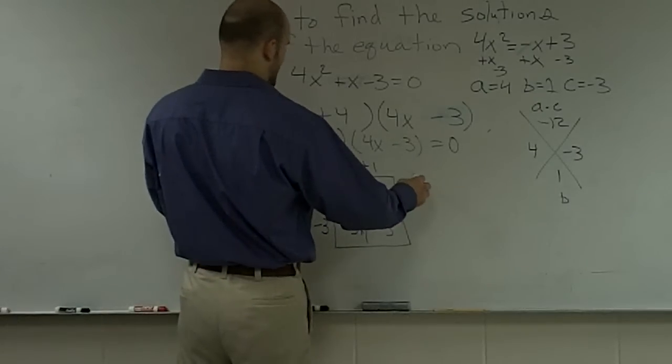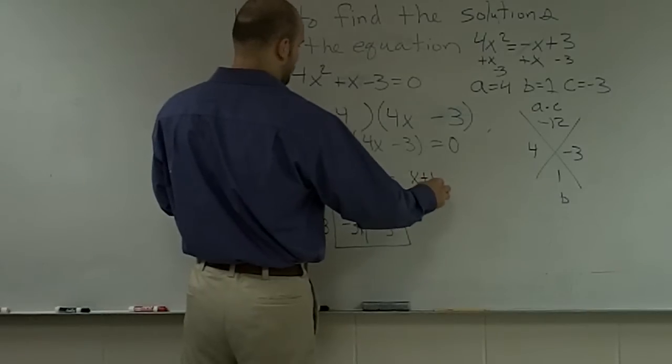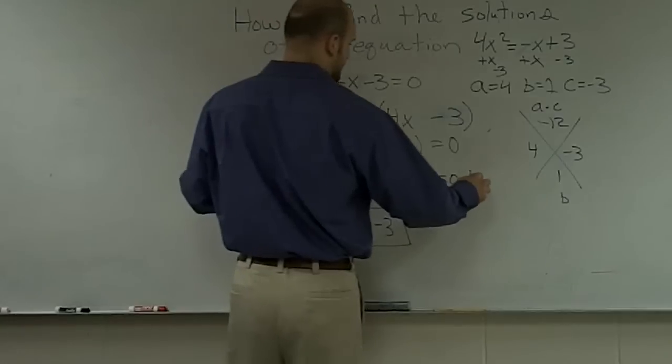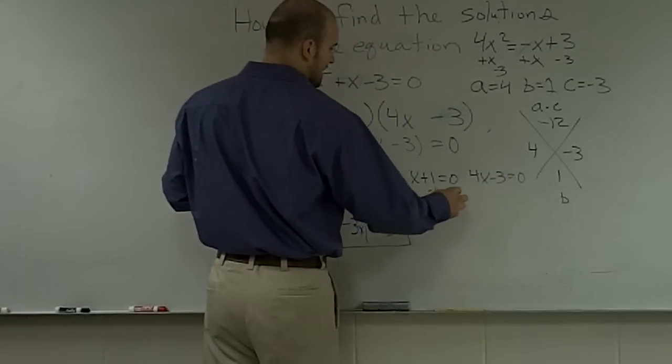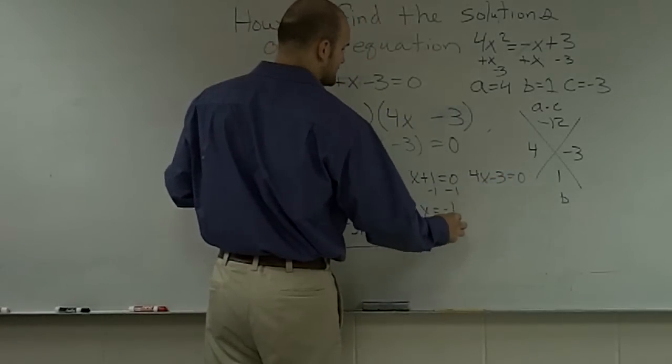So, therefore, let's go and solve this. So, I have x plus 1 equals 0. 4x minus 3 equals 0. Minus 1 on both sides. x equals negative 1.